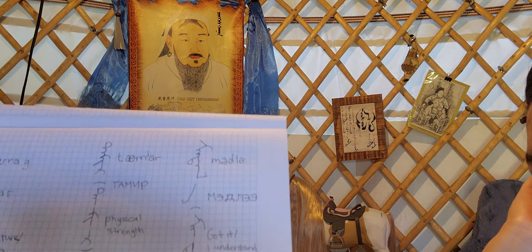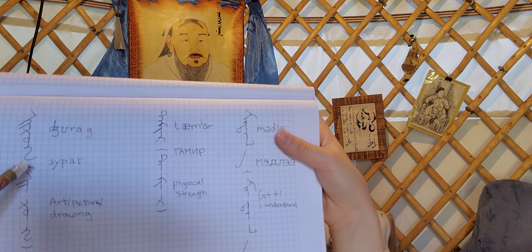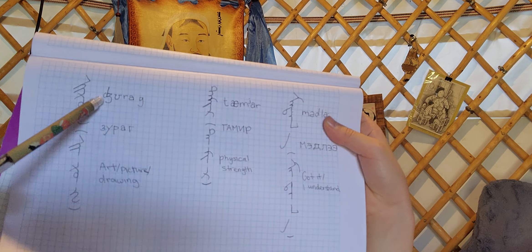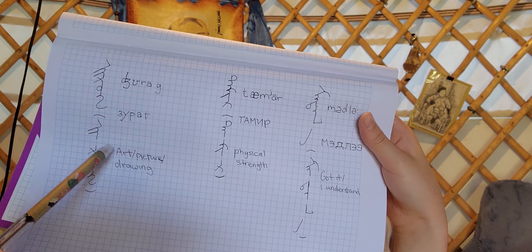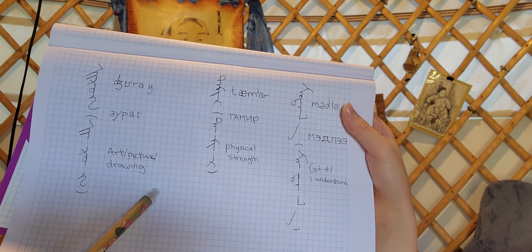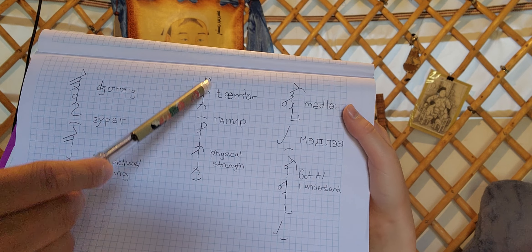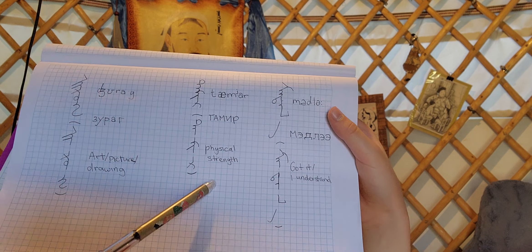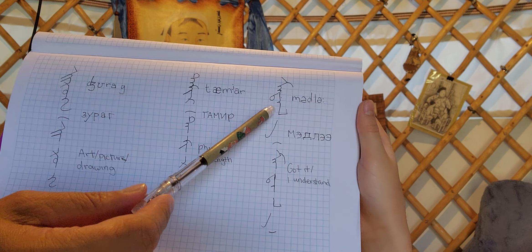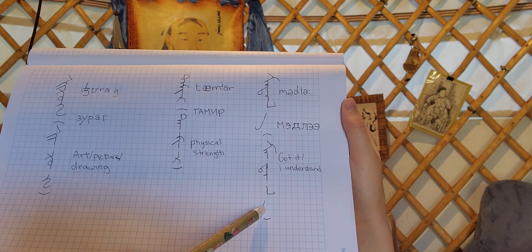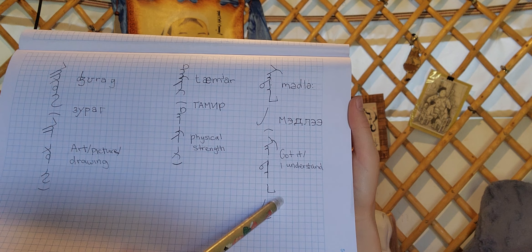Some more here. This one means art, picture, or drawing. This one is Tamir — Tamir means physical strength. This one is Mudla — the meaning is got it or understand.